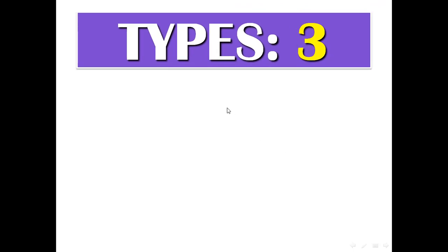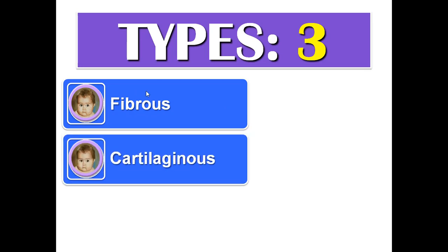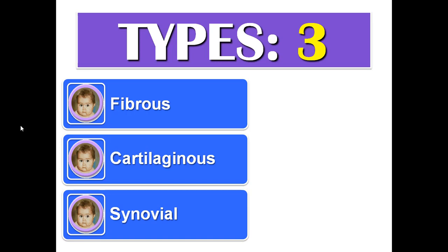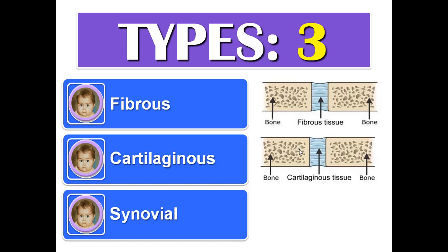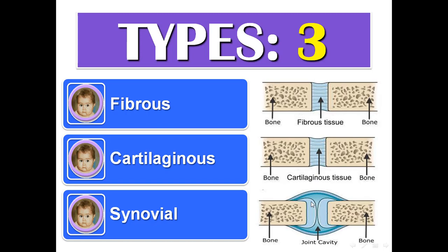We have three types of joints, according to the tissue between the two bones and according to the movement of the joint: fibrous joints, cartilaginous joints, and synovial joints. Fibrous joints: the two bones are connected by fibrous tissue, so they are immobile. Cartilaginous joints: the two bones are connected by cartilaginous tissue, they permit limited movement. In synovial joints, the two bones are separated by a space — a joint cavity — so they are freely movable.